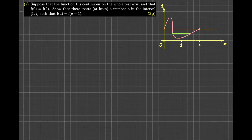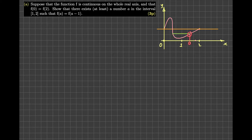If I choose this point to be a, then a minus 1 is exactly one unit to the left. You can see that the height of f of a and the height of f of a minus 1 are exactly the same. So this point is the a in this interval, and the existence of such a point is demonstrated graphically. I hope you understand the content of this simple but nice problem.